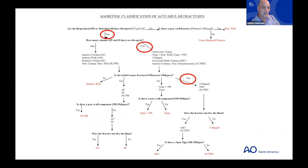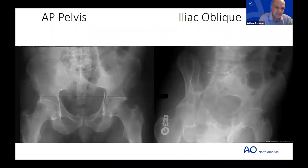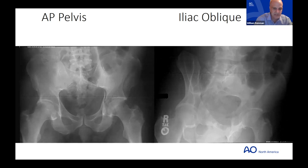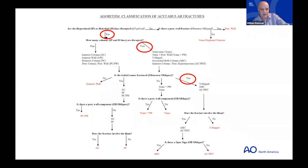The next question: does the fracture involve the ilium? The best view for the iliac wing is either the AP pelvis or the iliac oblique. Looking at both views, yes — the ilium is clearly broken, with arrows confirming the fracture on both the AP and iliac oblique. Going back to the algorithm: yes to iliac involvement leaves us with two possibilities — associated both-column or anterior column posterior hemi-transverse.